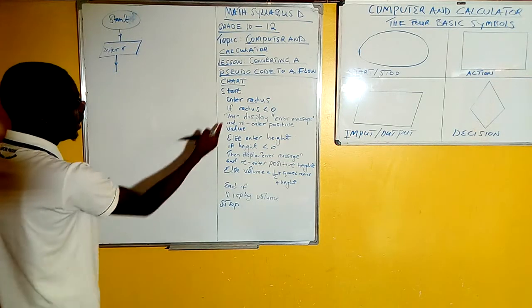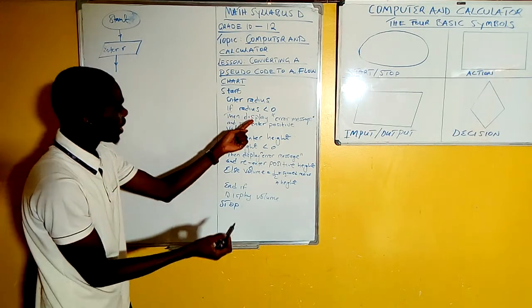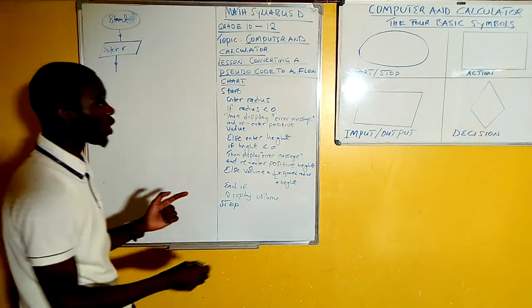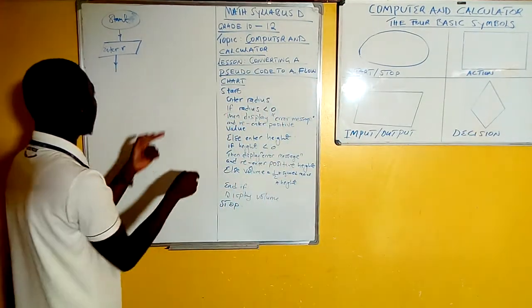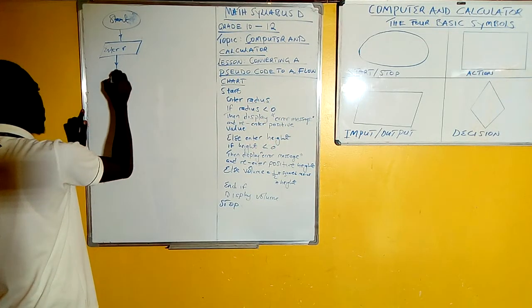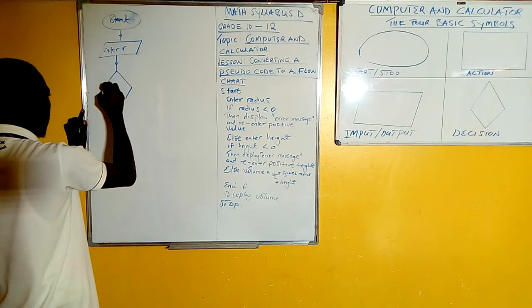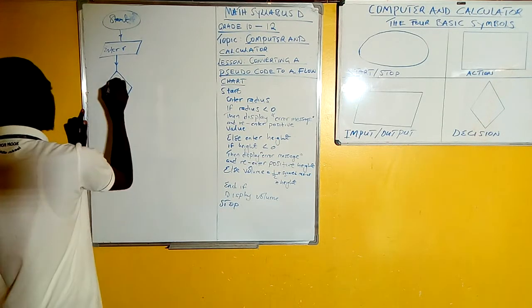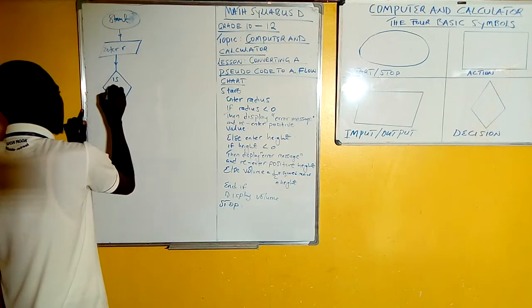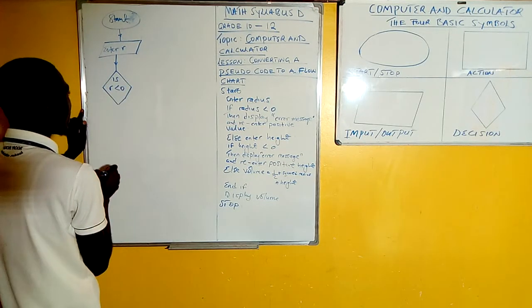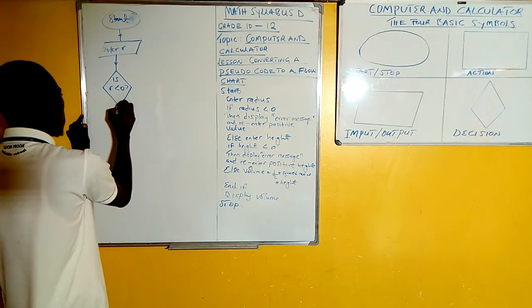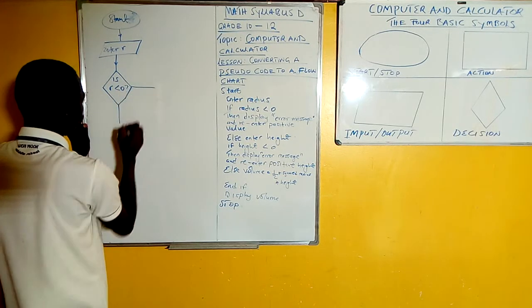Then you have to go to the next. Now the next instruction says if radius is less than zero. The moment you see if, then you know it's supposed to go into the decision box. Now the if here changes into is, as you are putting it in there. When you draw the diamond shape there, which looks like that, in here the if changes into is. Then is radius less than zero? So is r less than zero? Then there are two possibilities. It's a question. So there are two answers. They can either be that answer or that answer.